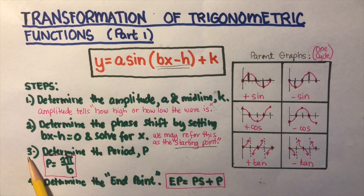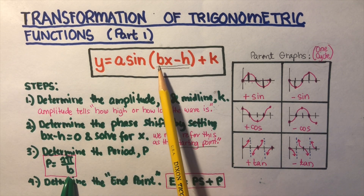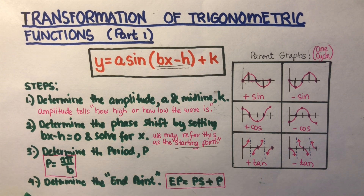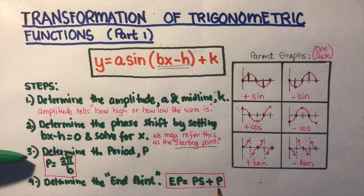The third step is to determine the period. The period formula is 2π over B, where B is the number in front of the x. The fourth step is to determine the endpoint by adding the phase shift (step two) plus the period (step three).